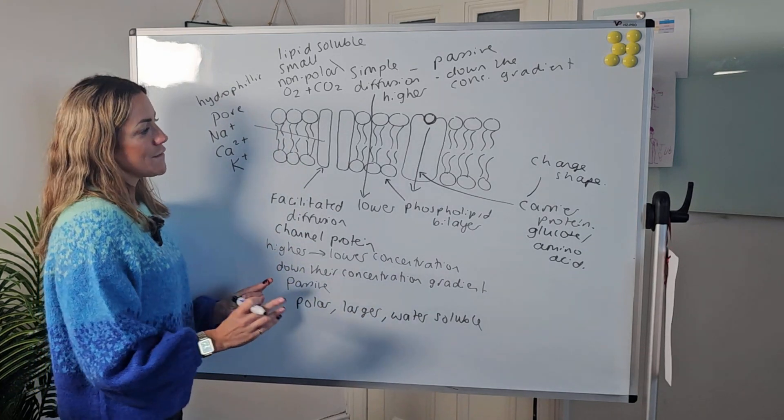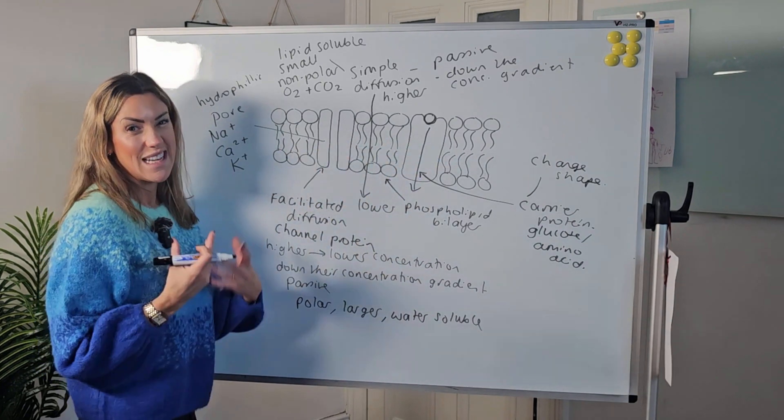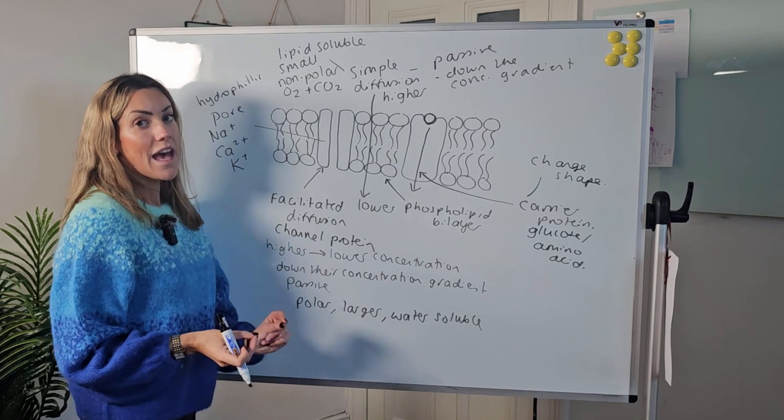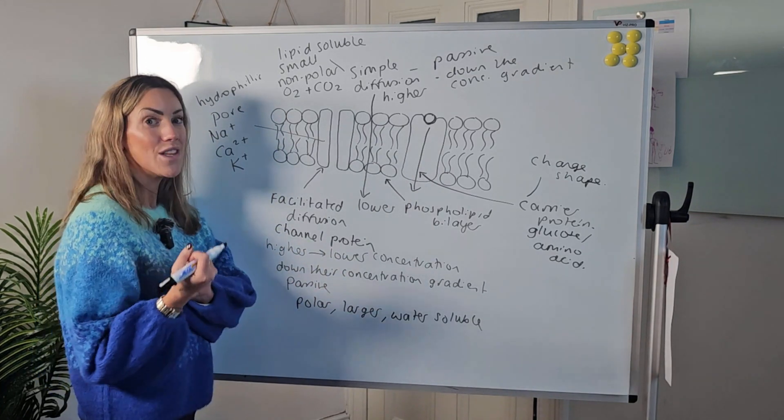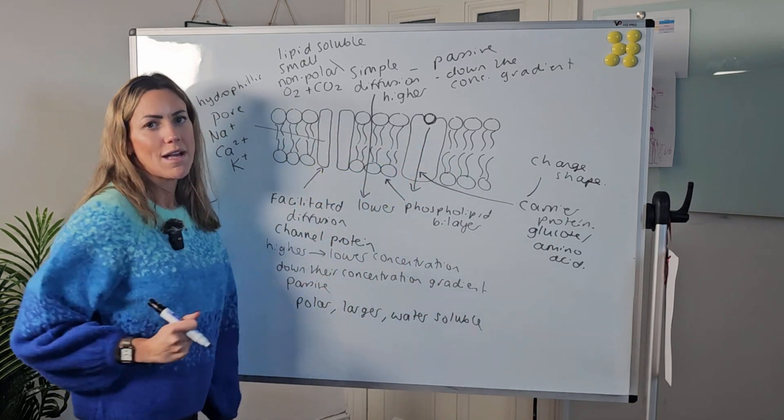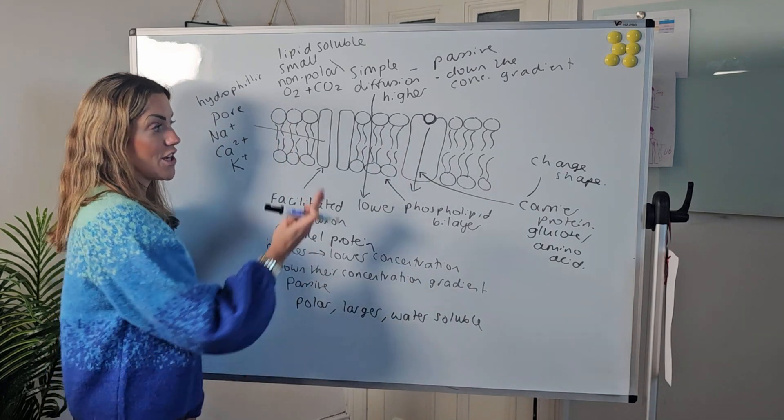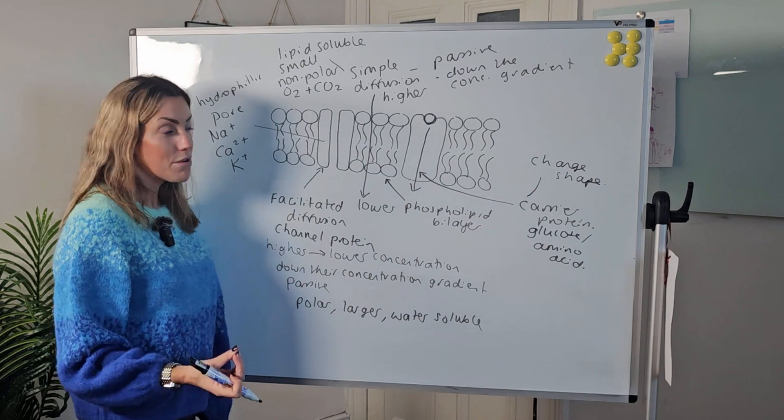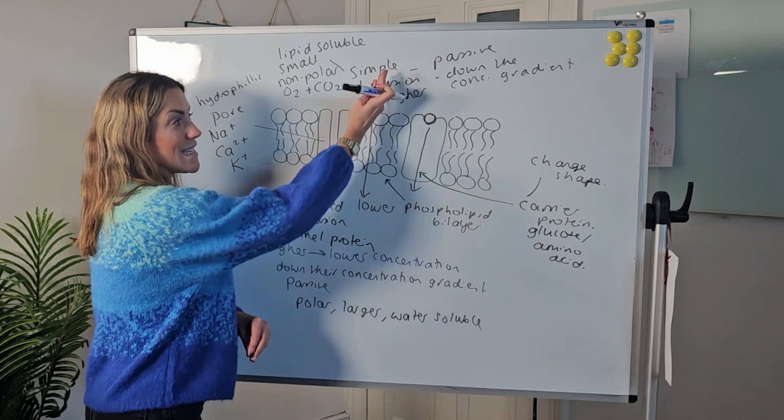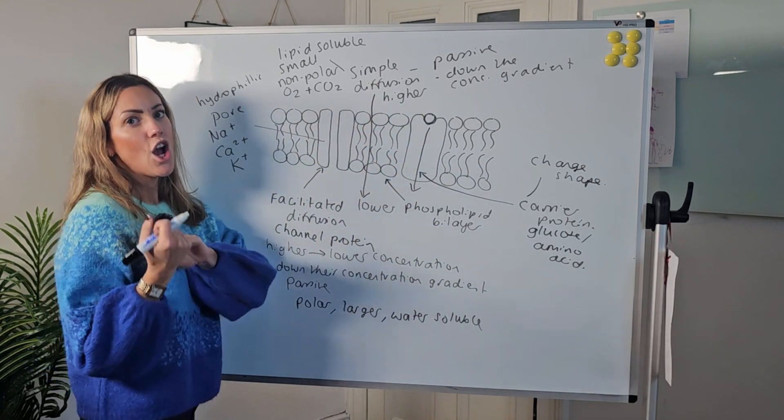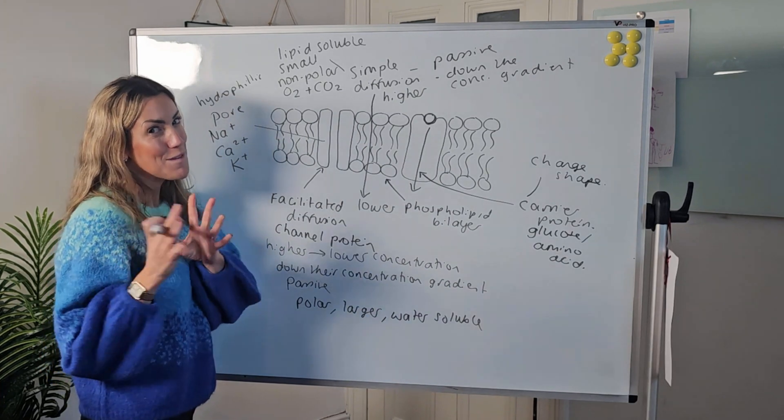Facilitated diffusion is requiring either a channel protein or a carrier protein. That's the main difference. Therefore, facilitated diffusion is going to be limited by the number of these transport proteins in the cell surface membrane, whereas simple diffusion is not limited by the number of proteins because it is simply occurring across the phospholipid bilayer itself. I hope you found that useful.